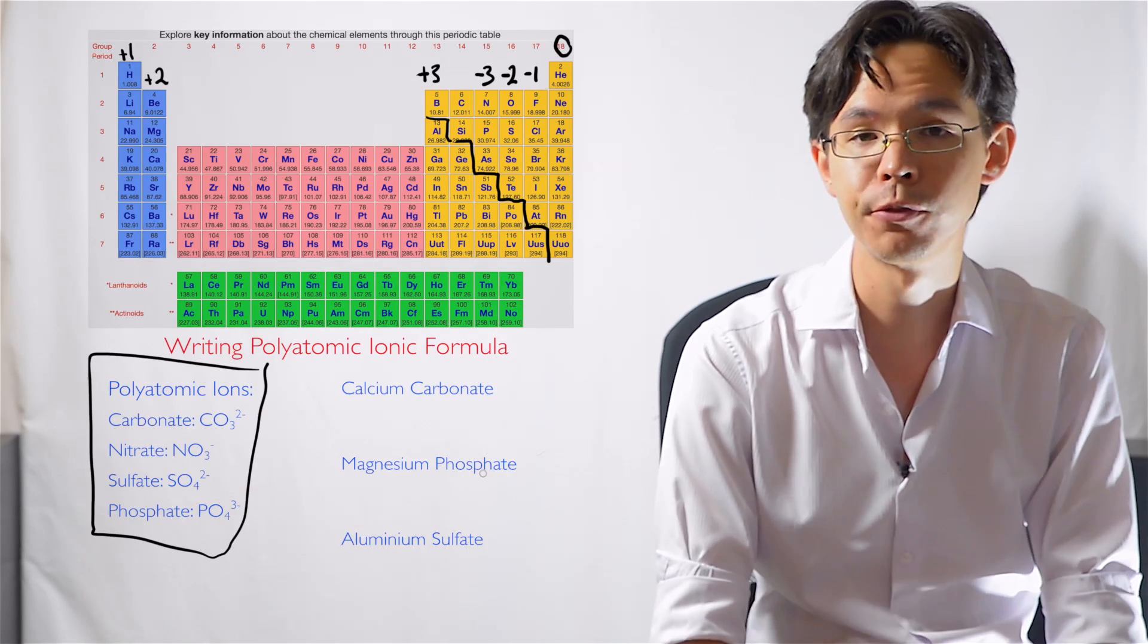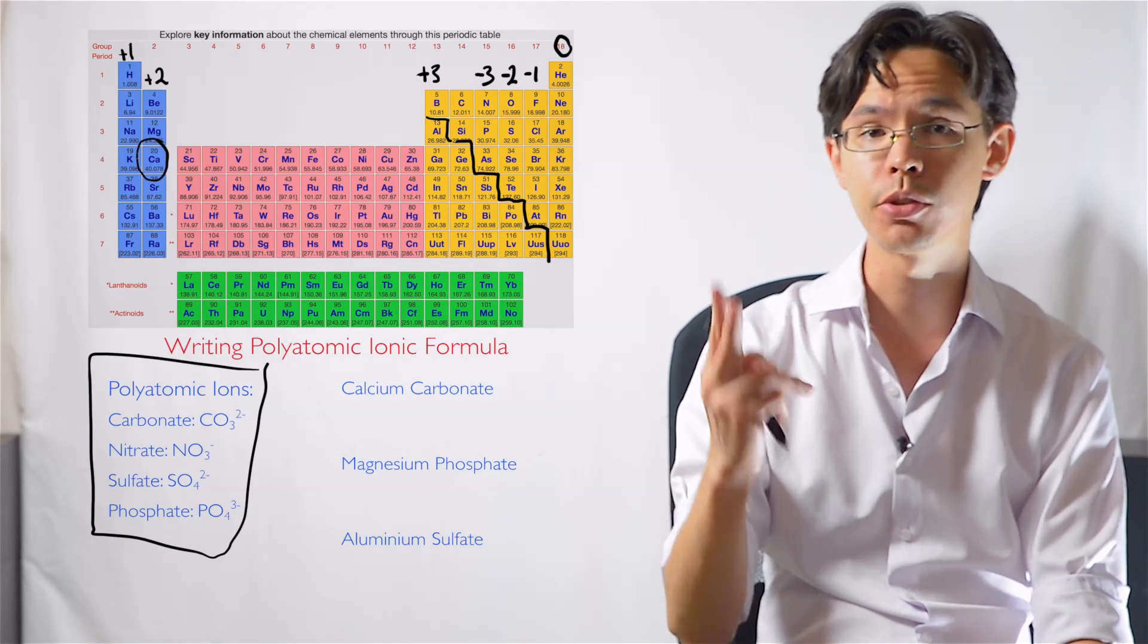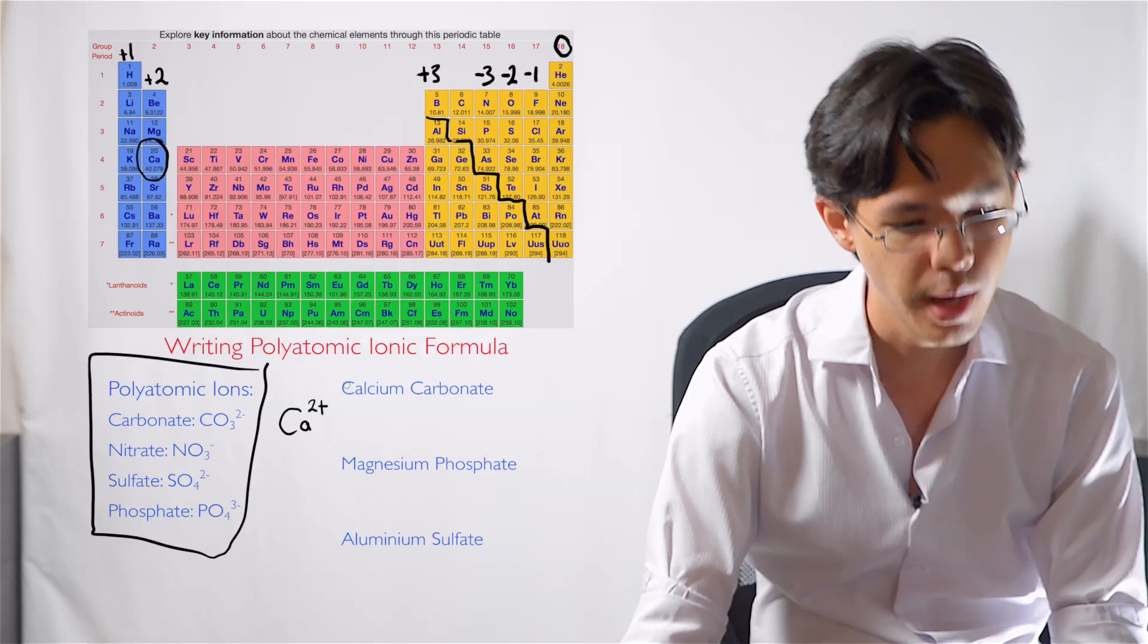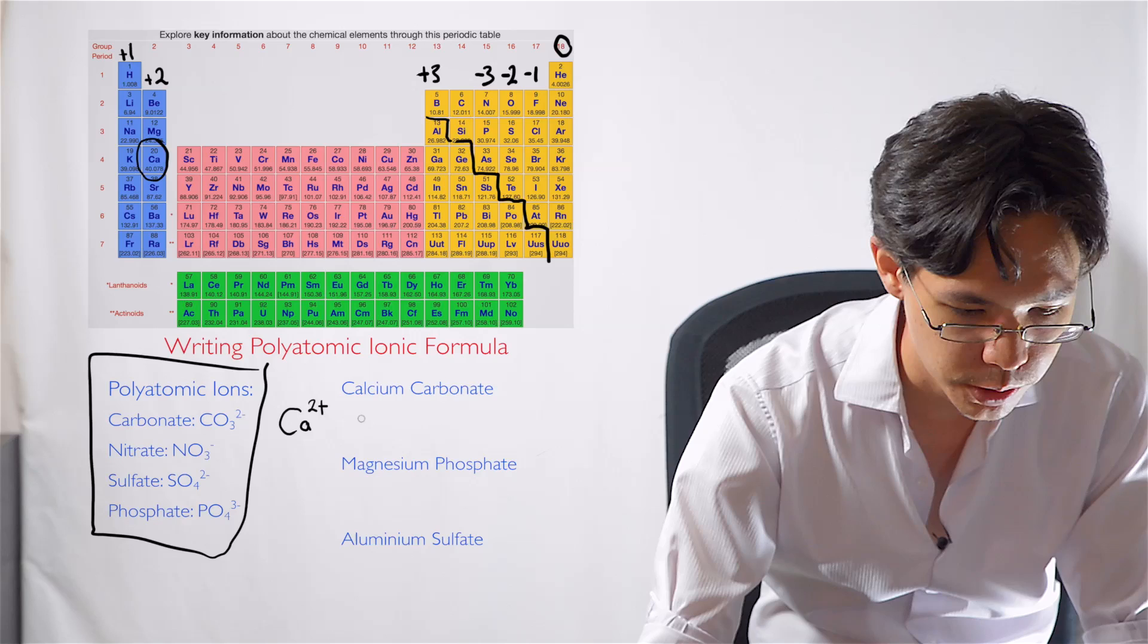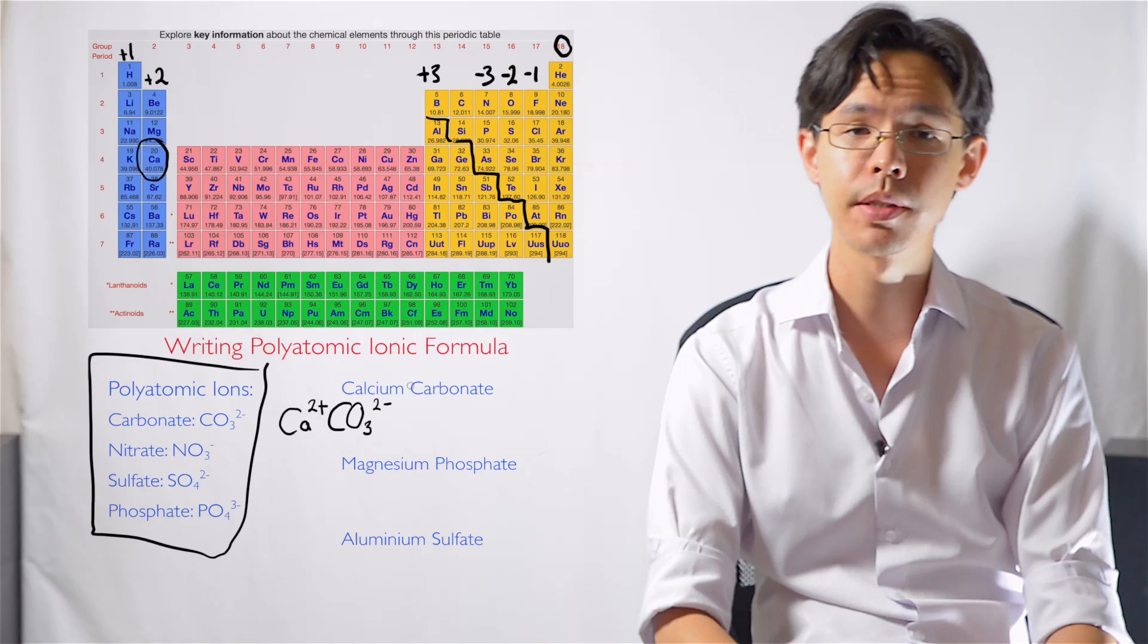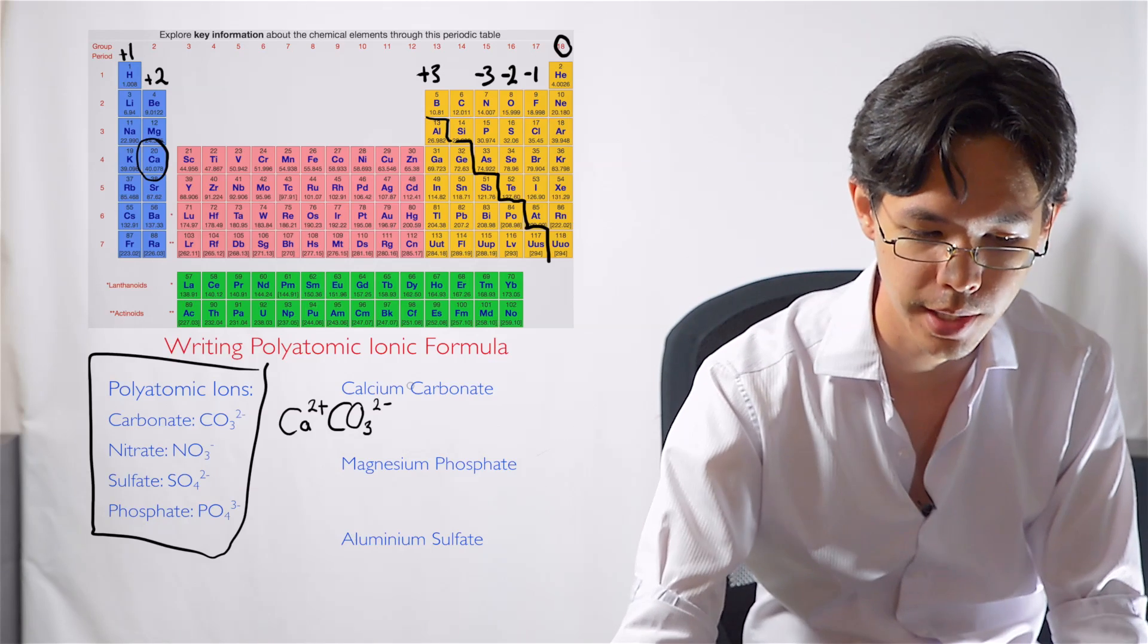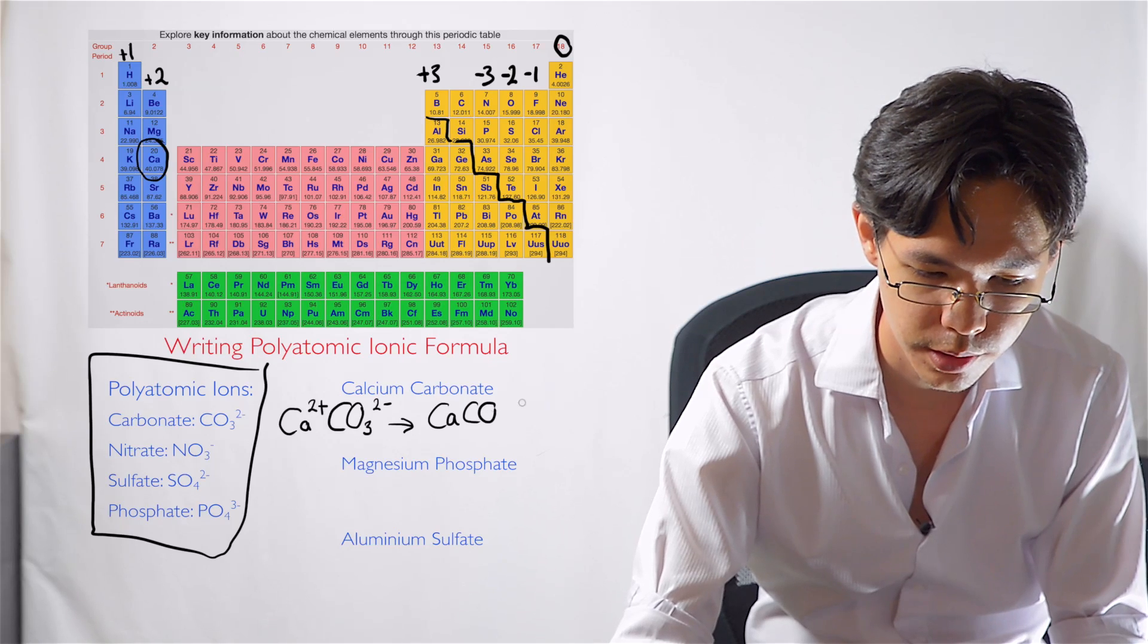So I'm going to write down the formula for calcium carbonate. So I look up calcium on the table, here it is. Calcium's got a 2+ charge. So I'll write calcium here, 2+ charge. And then I look up carbonate, which is this one here. Carbonate, it has a 2- charge. So now we examine the compound and we see, is this neutrally charged overall? Two positives, two negatives. It balances, so that is very simple to write. So that becomes CaCO3.